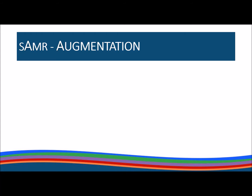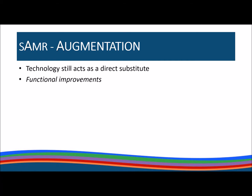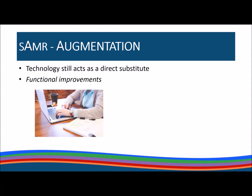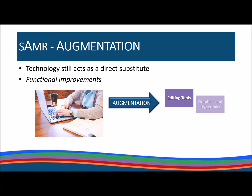The A in SAMR is for augmentation. Here, technology still acts as a direct substitute, but there is a functional change. Students may still be typing a report in a Word document, but they are also utilizing features like spell check or cut and paste, including graphics to illustrate their ideas, or adding hyperlinks to connect to online information.